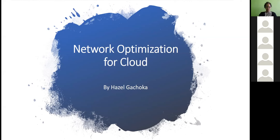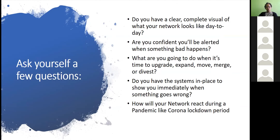Thank you, Martha. Good afternoon, everyone. I'll be talking about network optimization for cloud, which also applies to any network — it's good to always know what's happening. Start by asking yourself key questions: Do you have a clear visual of what your network looks like day to day — is it at 10% or 50% capacity? Are you confident that when something bad happens, you will be notified proactively? You don't want users calling you. You want to be ahead of it, like Safaricom alerting customers to outages before users report them.